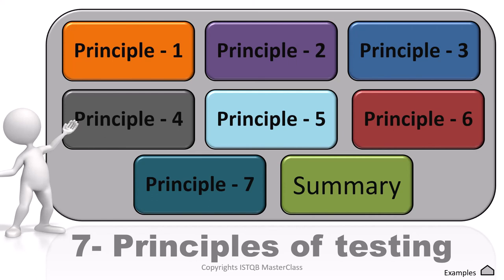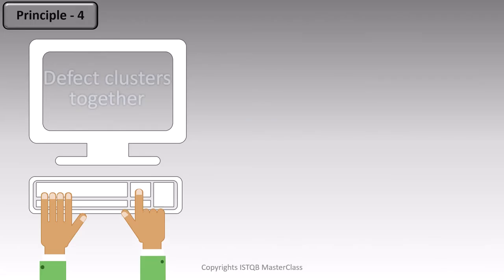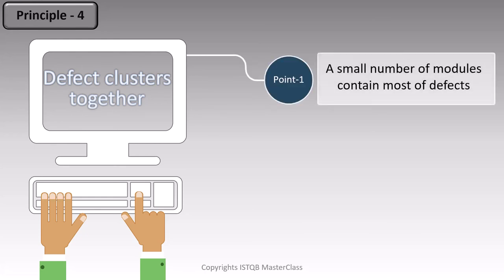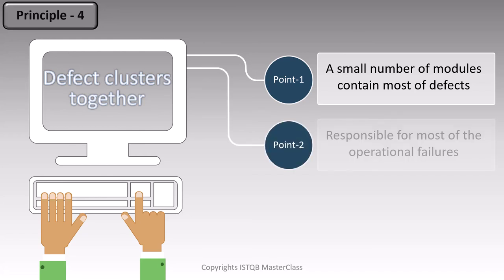Now we are on the fourth principle of testing. Principle 4 states that defects cluster together. Sometimes a small number of modules can contain most of the defects. And those defects can be responsible for most of the operational failures. Though these are only a few modules, the defects present in them can cause operational failure.